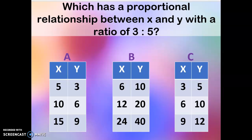Which has a proportional relationship between X and Y with a ratio of 3 to 5? So your 3 is the first one which is X, your 5 is the Y.